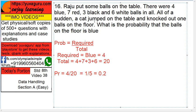Now we have to find this. Probability equals required upon total. So what is required? Required is blue. How many blue? 4.